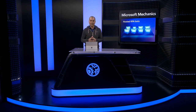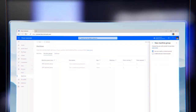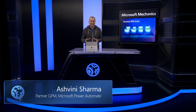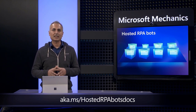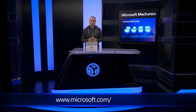So that was a quick demonstration of how you can easily set up and use hosted RPA bots to automate your repetitive tasks at scale. Importantly, coming soon — to give you more flexibility and make it easier to integrate with your authenticated sites and experiences — you'll be able to use an existing work or school account like you would use for Office 365 or the Power Platform as credentials for your bots. We'll continue to add more capabilities based on your feedback — let us know what you think in the comments below. To learn more, check out aka.ms/hostedRPAbotsdocs, and you can try it yourself by signing up at aka.ms/tryhostedRPAbots. Be sure to subscribe to Microsoft Mechanics for the latest tech updates — thanks for watching.